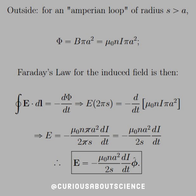Outside the solenoid it looks pretty similar but gives a different induced field. For the flux outside, instead of having B pi S squared, we use B pi A squared, because A — the radius of the solenoid — is the limiting factor. The field is zero outside, so everything has to be inside or at the boundary. Neglecting fringing fields, we have phi equals mu-naught n I times pi A squared.